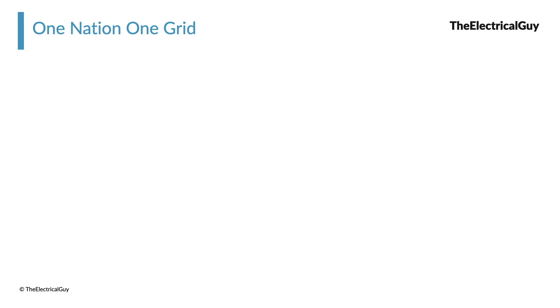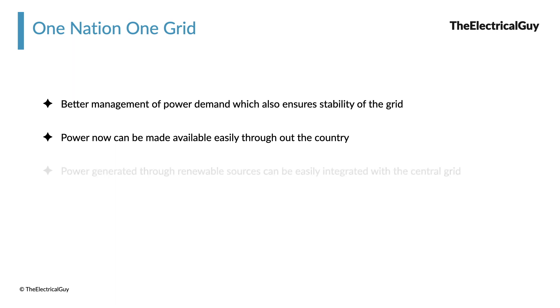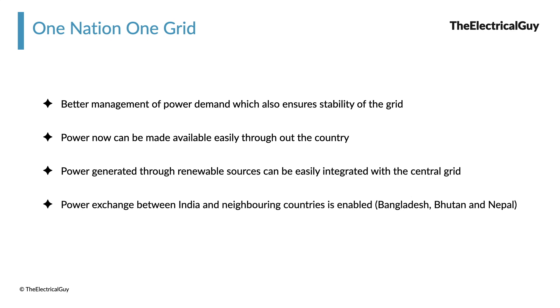This One Nation, One Grid program has largely benefited us. We can now have better management of power demand, which also ensures stability of the grid. Power can now be made available more easily, which is supposed to lead to lower tariffs. Power generated through renewable sources can be easily integrated with the central grid. Not only this, but India's national grid is also connected to neighboring countries like Bangladesh, Bhutan and Nepal, enabling power exchange between India and these countries.